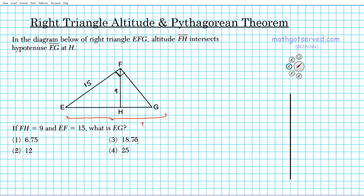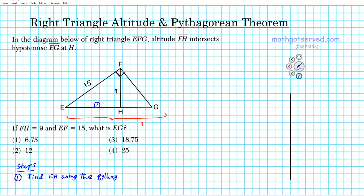Let's go over the steps we're going to implement to solve this problem. Step one: we're going to find segment EH. If you look at triangle EFH, this is a right triangle and you can use the Pythagorean theorem to find this piece. Then after we find that measure, we're going to make use of something called the right triangle altitude theorem — using the altitude and this portion of the hypotenuse that the altitude breaks off.